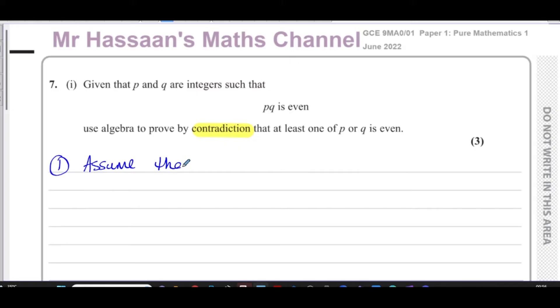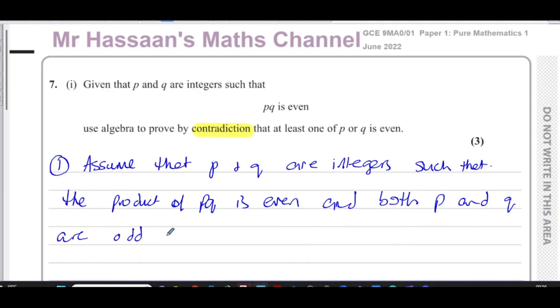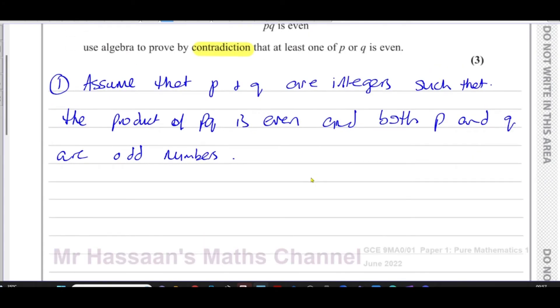So we're going to assume that P and Q are integers such that the product of PQ is even and both P and Q are odd numbers. So that contradicts the original statement. What's the contradiction? What's the opposite of saying at least one of P or Q is even? Well, that they're both odd. So now we've got to prove that this leads to a situation which doesn't make any sense, that basically contradicts what we said.